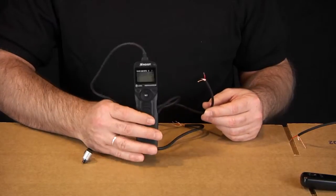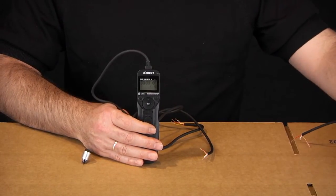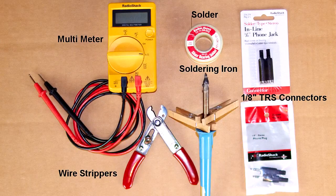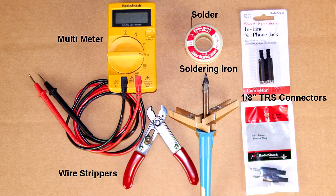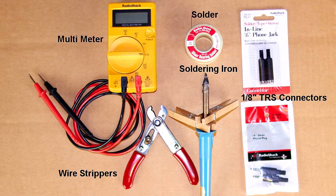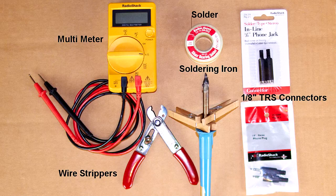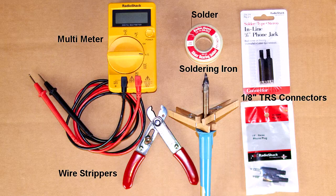There's a few tools you're going to need in order to do this operation. You're going to need a multimeter, wire strippers, soldering iron and solder along with the male and female 1/8th TRS connectors. I'll have all this listed below in the description.